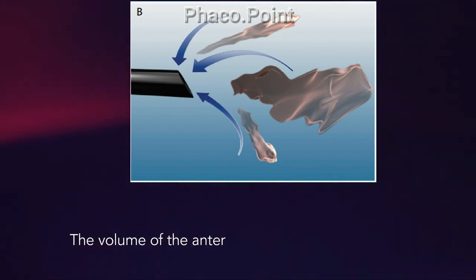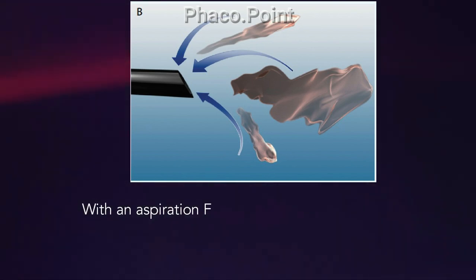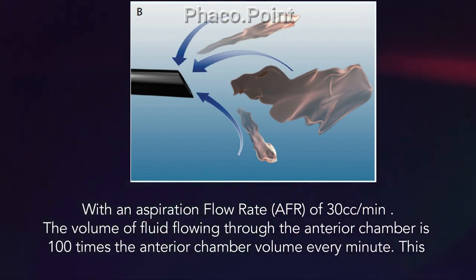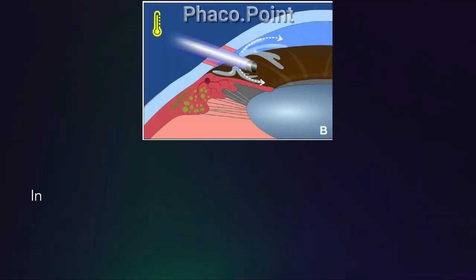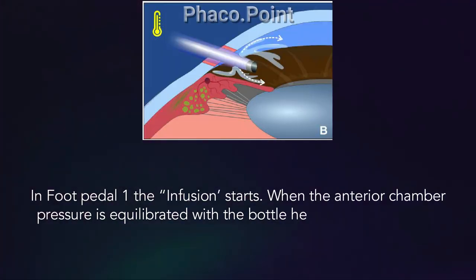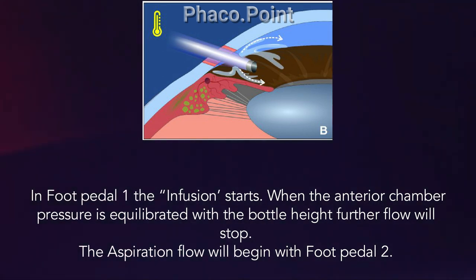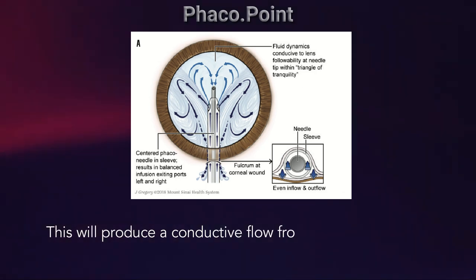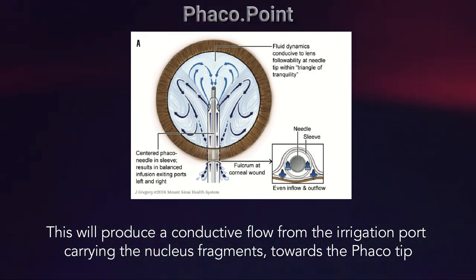Consider that the volume of the anterior chamber is just 0.3 ml of fluid. When an aspiration flow rate of 30 cc per minute is set, the volume of fluid flowing through the anterior chamber is 100 times the anterior chamber volume every minute — quite a lot of flow. In foot pedal 1, the infusion starts. When the anterior chamber pressure is equilibrated with the bottle height, further flow will stop. The aspiration flow begins only with foot pedal 2. This produces a significant convective flow issuing from the irrigating port of the silicone sleeve, carrying the nuclear fragments towards the phaco tip.